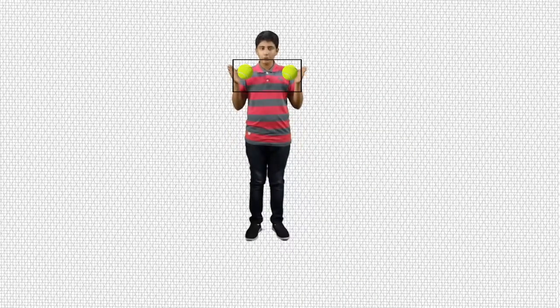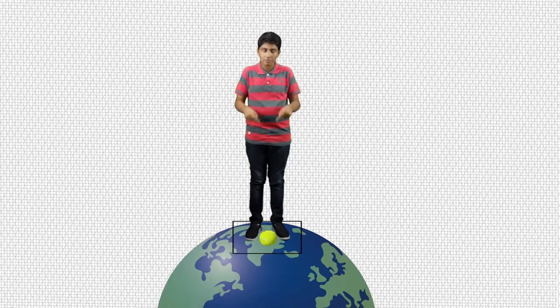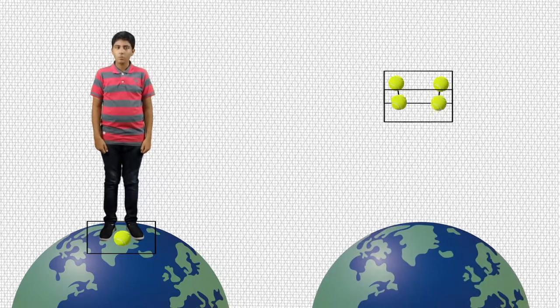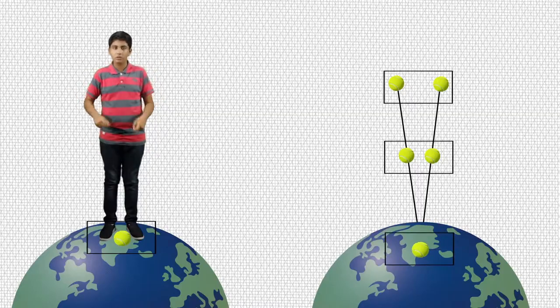Let's say I put two balls inside a box and then drop the box on earth. The balls fall towards the centre of the earth. As they fall down, the balls move closer and closer as each of them is attracted to the centre of the earth.